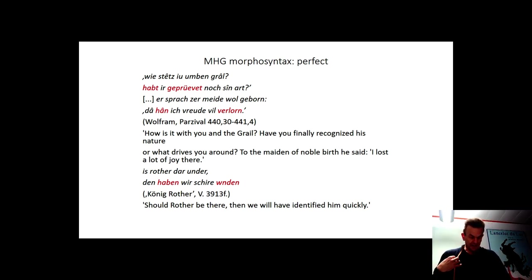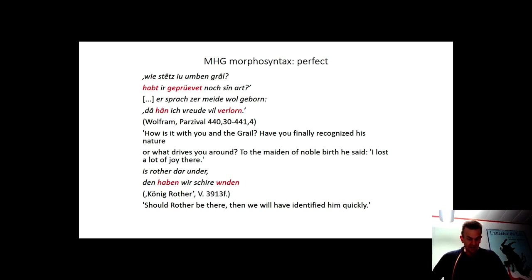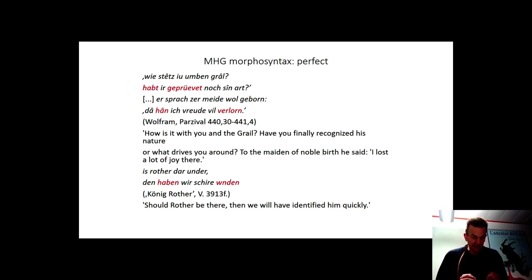The Middle High German passage reads: 'Wie steht's umben Graal? Habt ihr geprüft, wird noch sie naht? Oder wie es bewendet über Fahrt? Er sprach, zameide, wohl geboren, da han ich Freude viel verlor.'